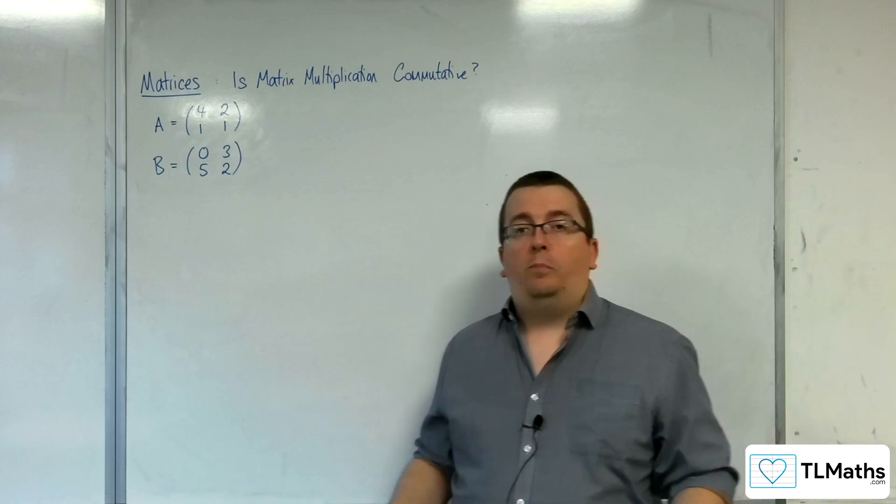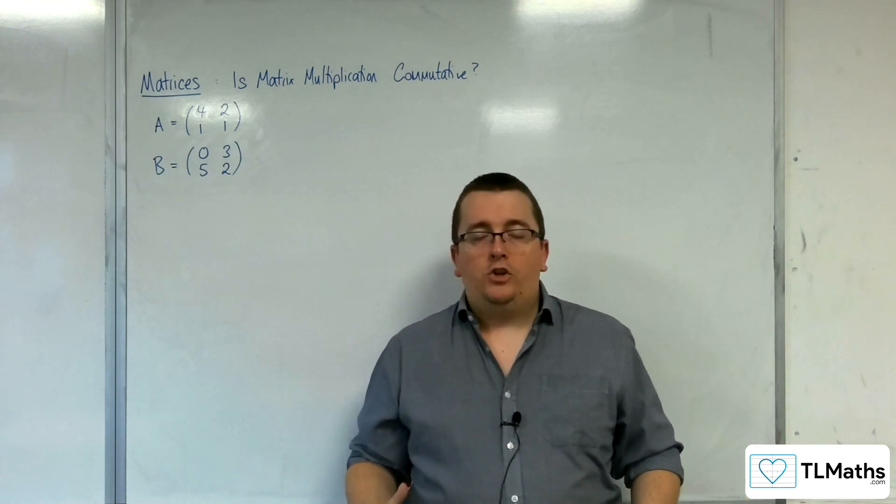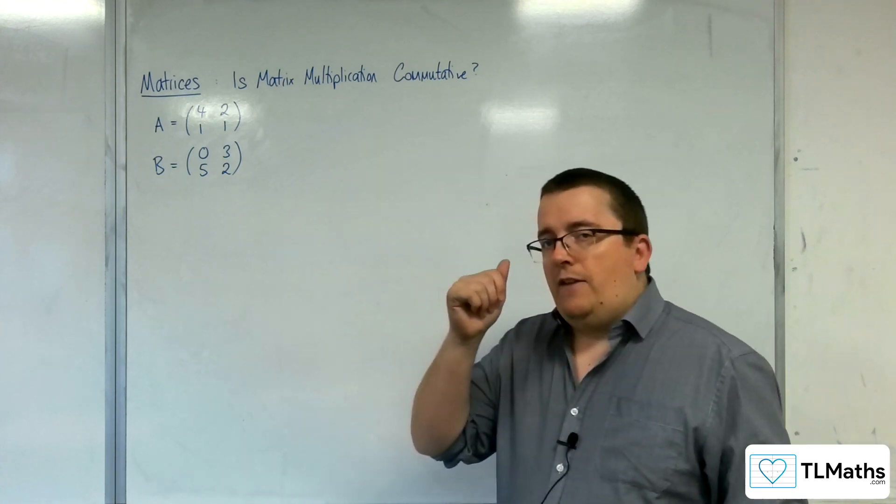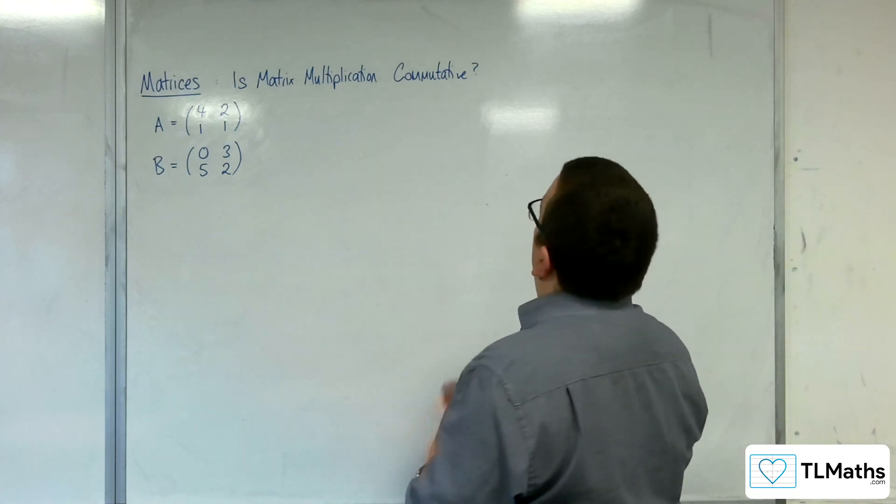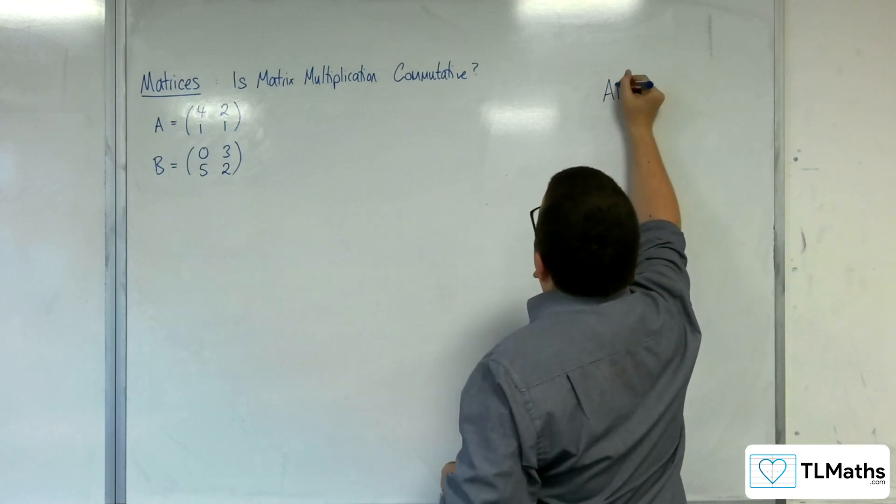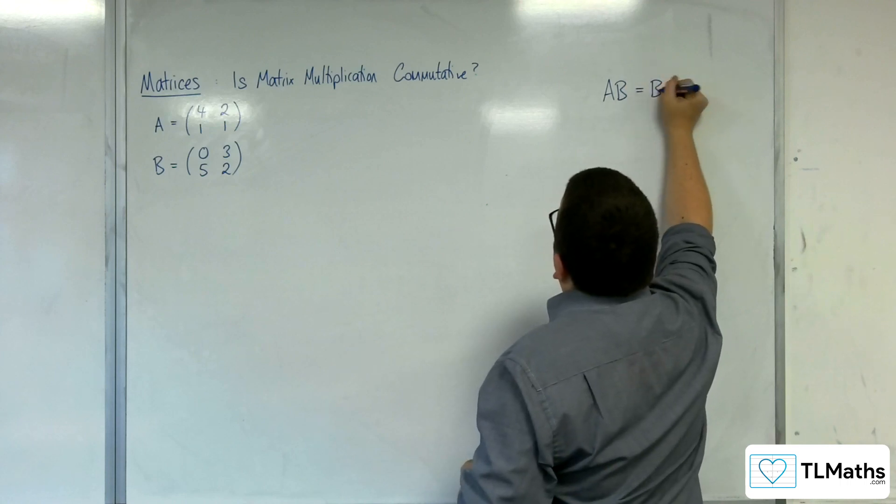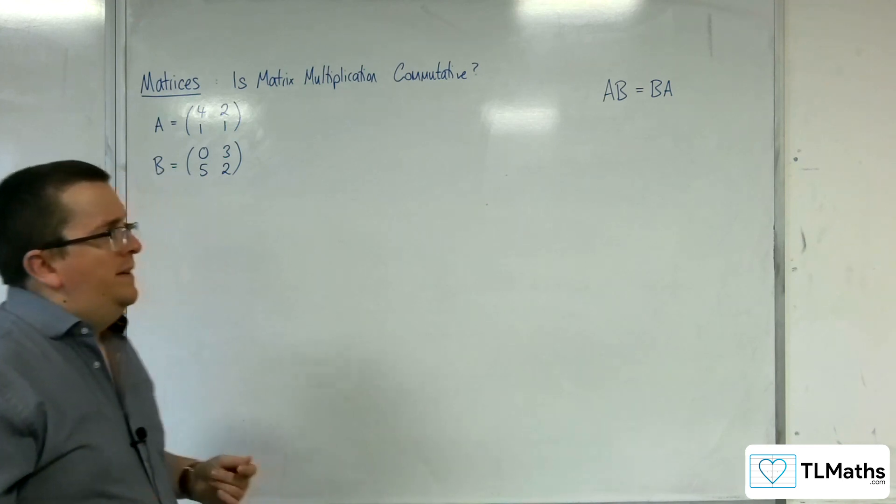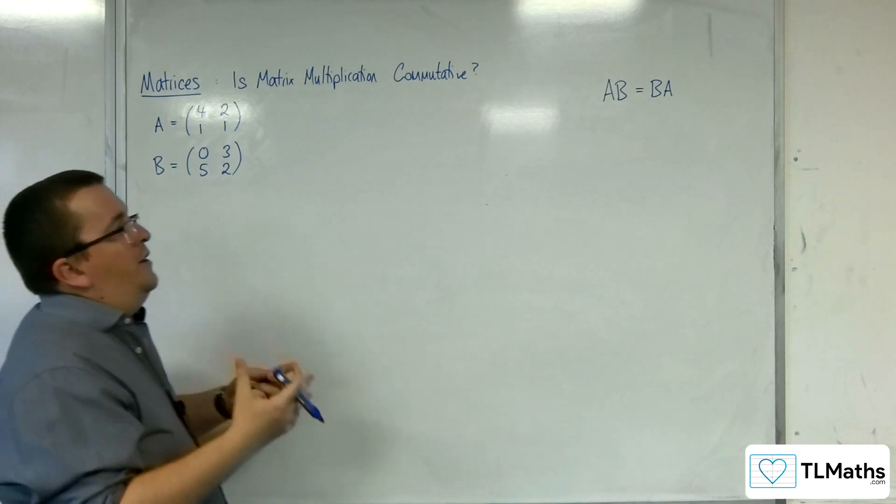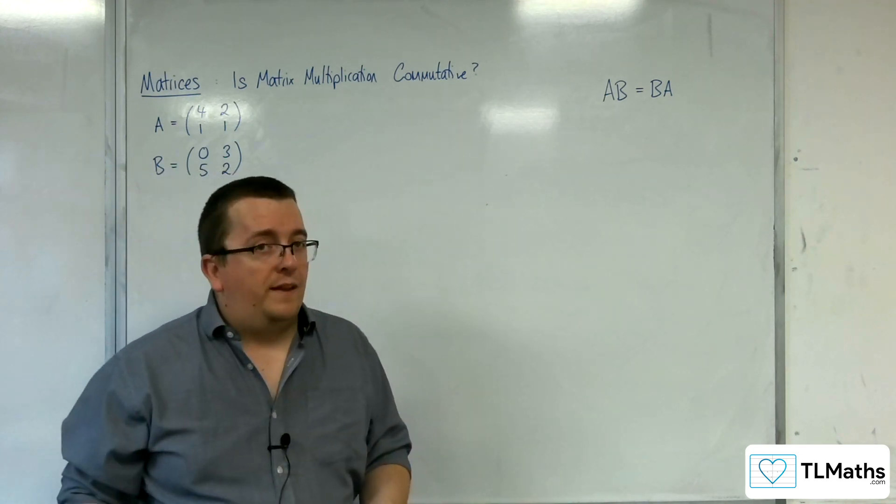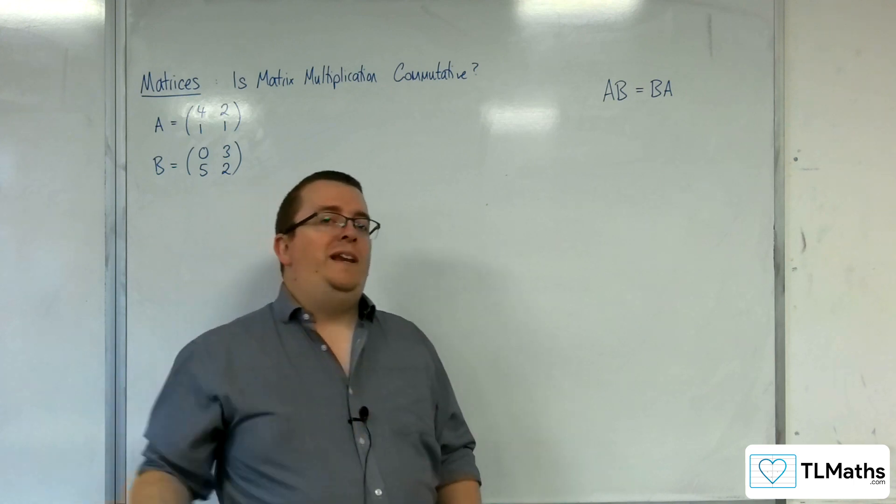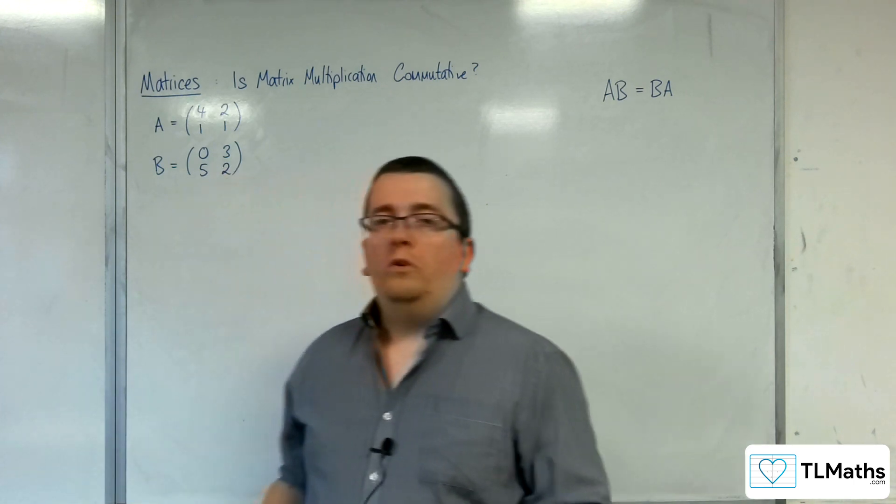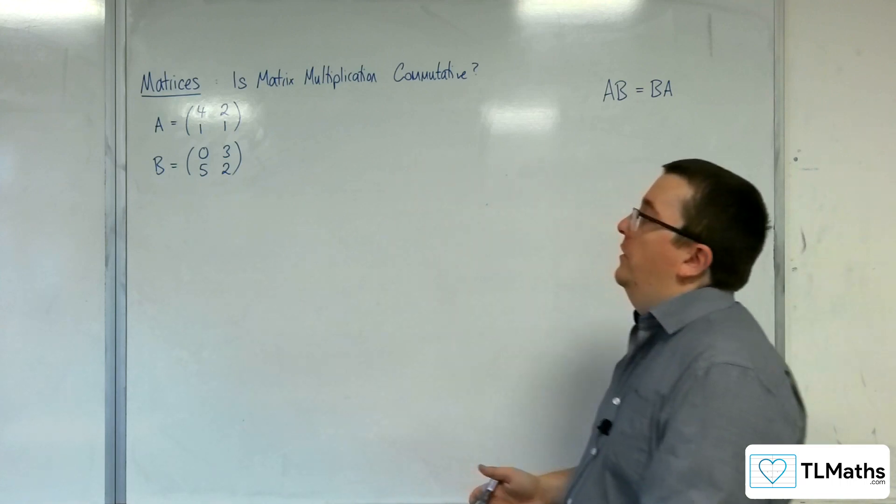In this video, we want to explore whether matrix multiplication is commutative or not. If it was the case, then AB would equal BA. Now, if I could show that this wasn't the case, then I would only need one example to show that it wasn't true. So we're going to just try an example to start off with.